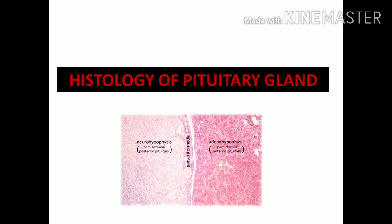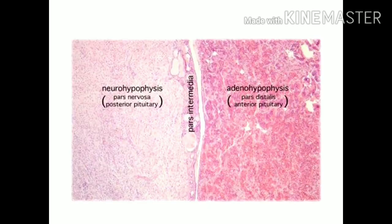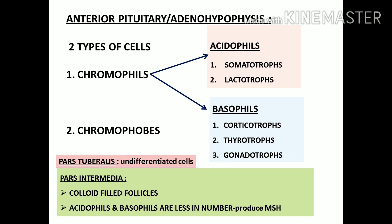Next we enter the histology of the pituitary gland — the cellular architecture in detail. We will learn all the parts: adenohypophysis and neurohypophysis. The cellular architecture of these two parts is clearly different, as can be seen in the histological images.